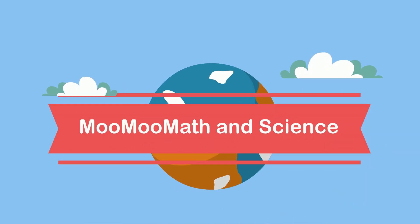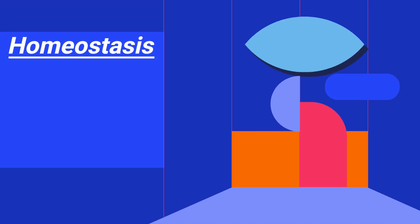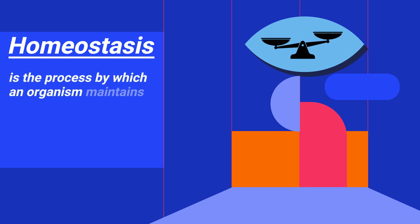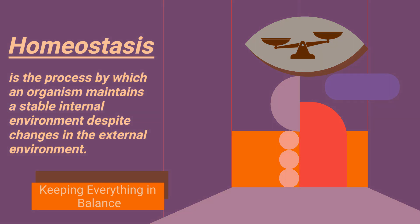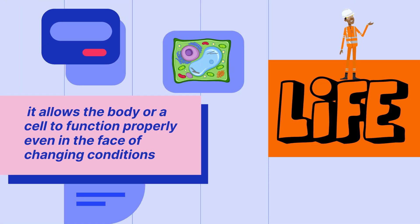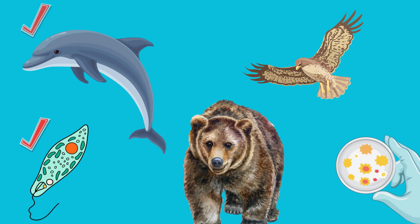Welcome to MooMooMath and Science. In this video, let's take a look at homeostasis. Homeostasis is the process by which an organism maintains a stable internal environment despite changes in the external environment. Homeostasis is essential for life as it allows the body or a cell to function properly even in the face of changing conditions. All living things must maintain homeostasis.